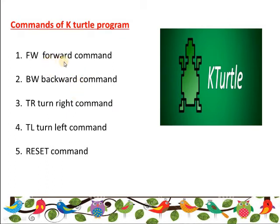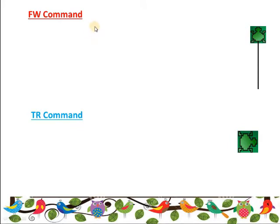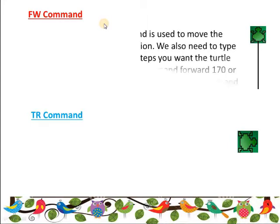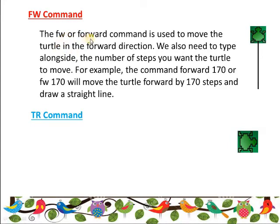Let's look at the uses or functions of each command: fw forward command, bw backward command, tr turn right command, tl turn left command, and the reset command. The fw or forward command is used to move the turtle in the forward direction. We also need to type alongside the number of steps we want the turtle to move. For example, the command forward 170 or fw 170 will move the turtle forward by 170 steps.